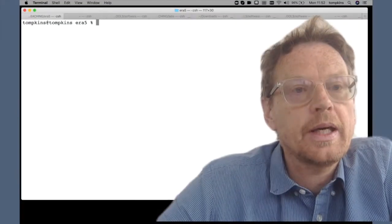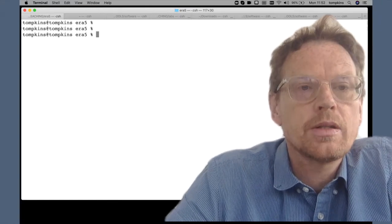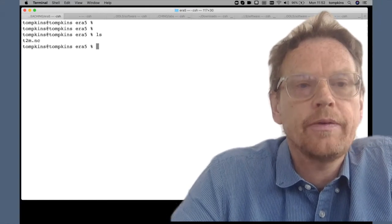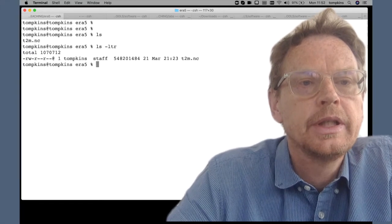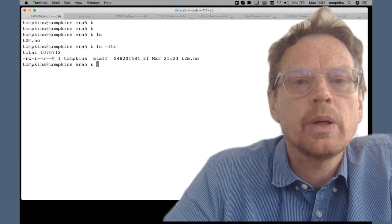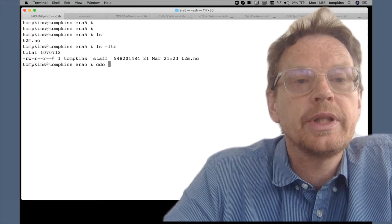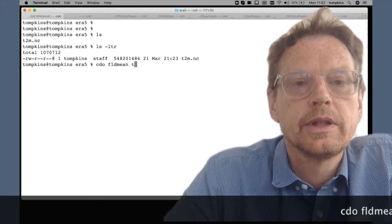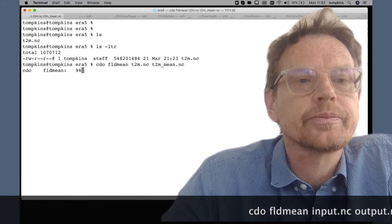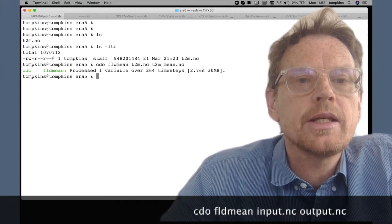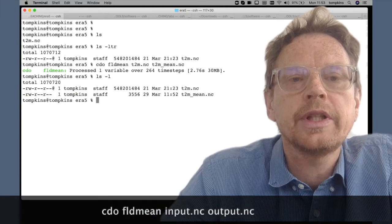So now I can show you how we can simply calculate the field mean using climate data operators. So in this directory we have our two meter temperature file T2M and now what I'm going to do is I am going to calculate the field mean using CDO and the command is simply CDO field mean T2M and then we need to think of an output file, and it is as simple as that. There we go, 2.76 seconds, and now we list the contents of the file.